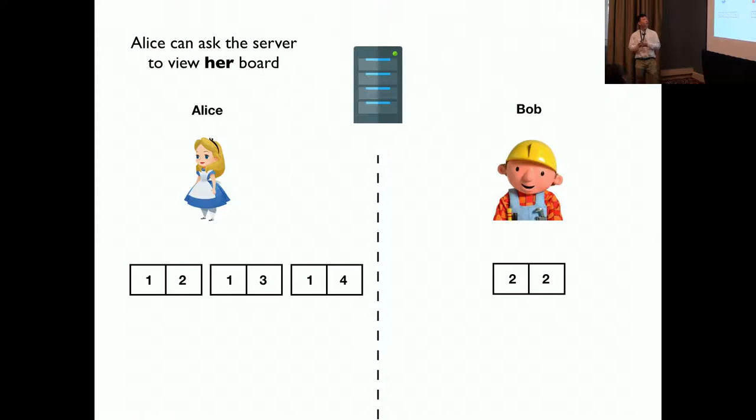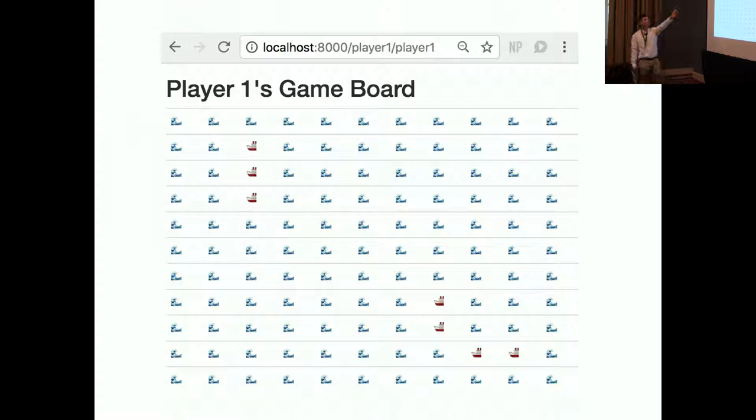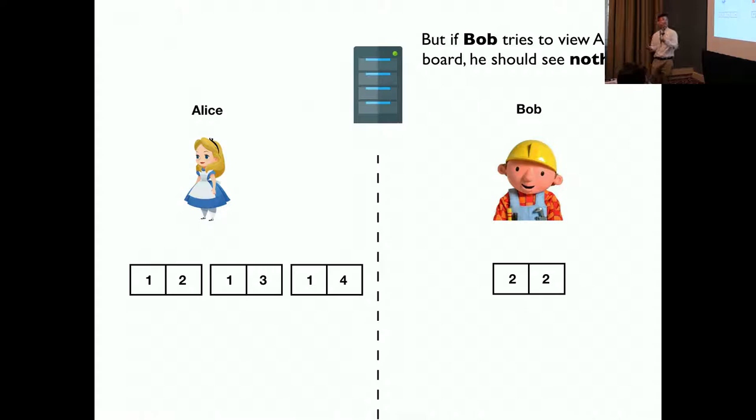Alice can ask the web server to see her board, and once identity is verified by the web server, she can see her board like this. As we can see, player one is Alice, and we see Alice's board as Alice, player one. We see the full board of Alice.